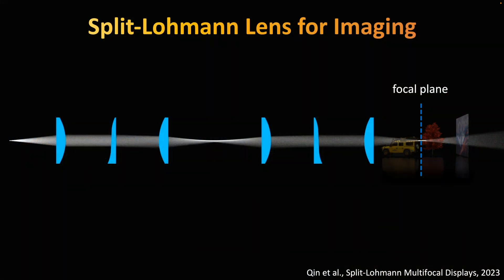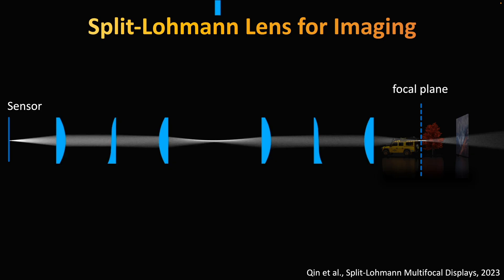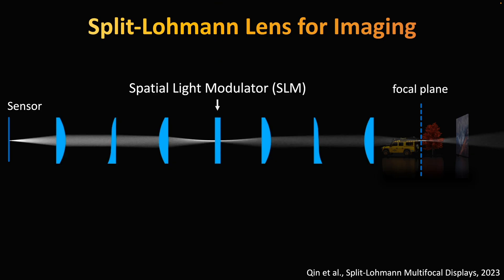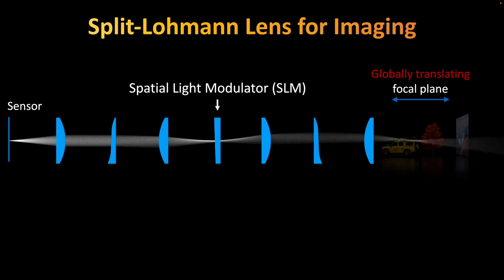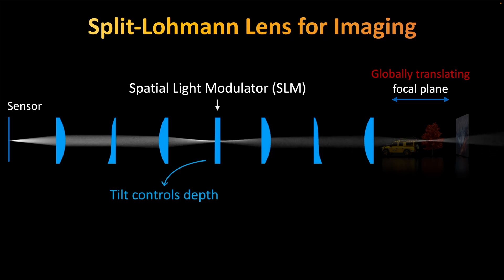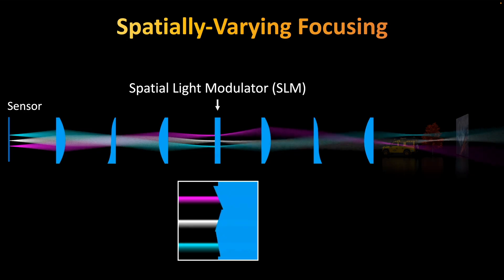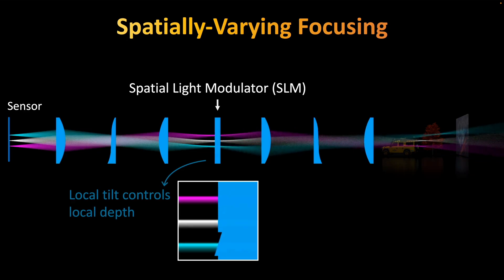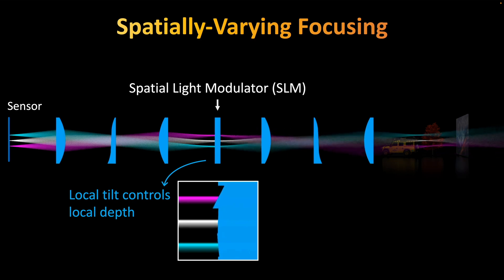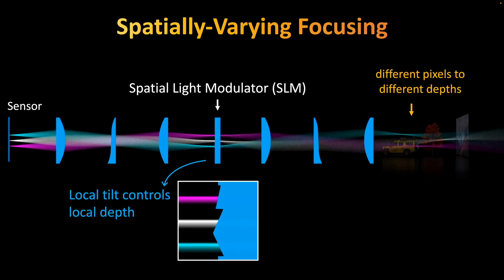Achieving this requires a novel optical architecture. Our design adapts the split lumen lens by co-locating the sensor with a spatial light modulator, or SLM, that redirects light — with its tilt controlling the focal plane depth. Since the sensor and the SLM have a pixel-to-pixel correspondence, we can choose local tilts on the SLM to independently control the local depths for individual pixels on the sensor. With this idea, we can simultaneously focus different pixels to different depths.